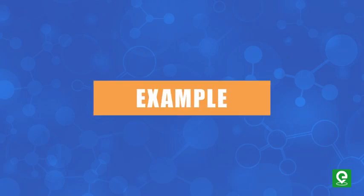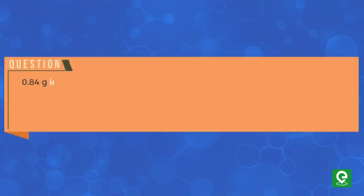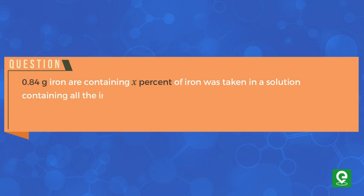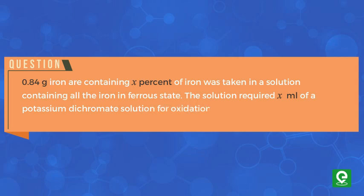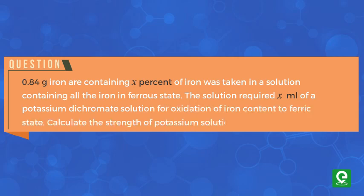Now with this understanding, let's solve an example. 0.84 gram of an iron ore containing X percent iron was taken in a solution with all the iron in the ferrous state. The solution required X ml of a potassium dichromate solution for oxidation of the iron content to the ferric state. Calculate the strength of the potassium dichromate solution.